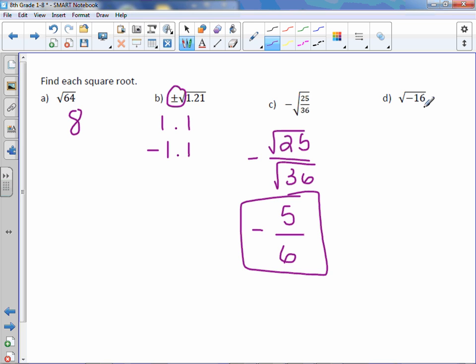Letter D, again, this one I want you to put in your calculator and see what happens. When you type in square root of negative 16, you're going to get an error. And here's why. There are no real roots. Nothing times itself will give you a negative 16. No real number times itself will give you a negative 16.